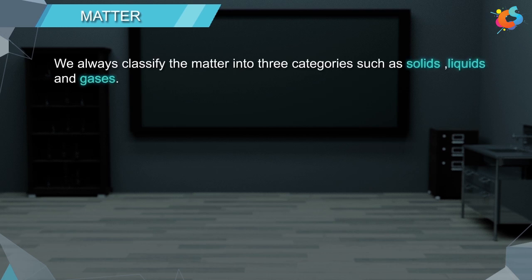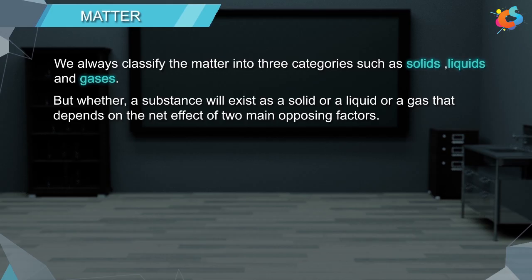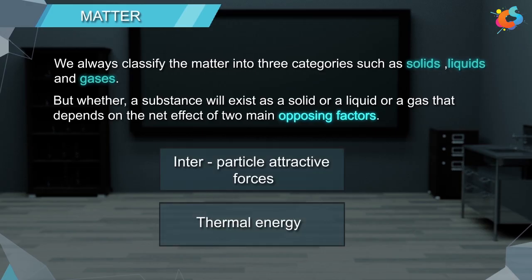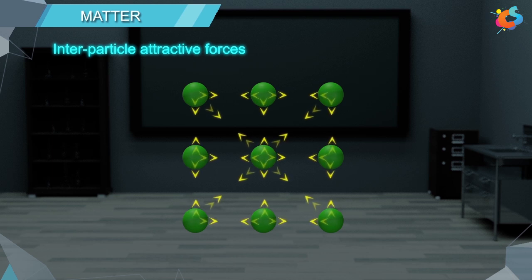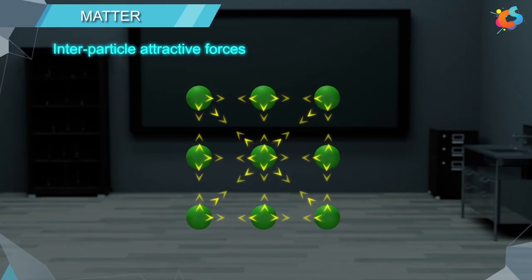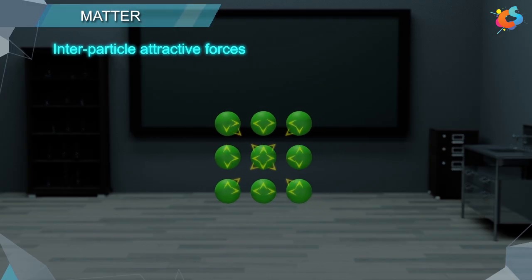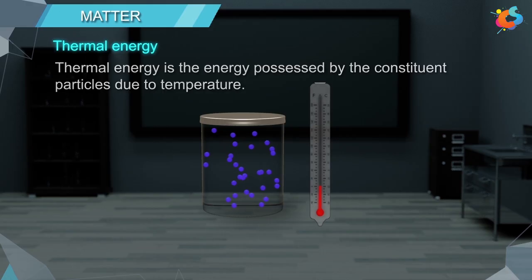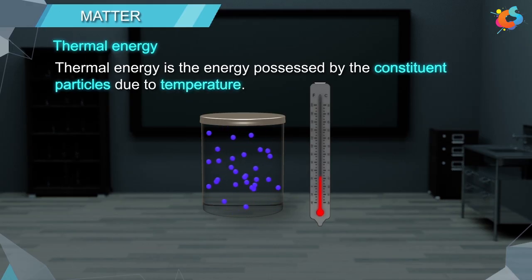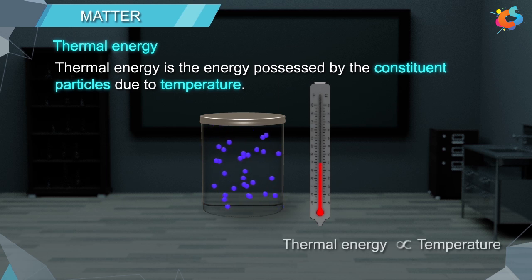We always classify matter into three categories: solids, liquids, and gases. But whether a substance will exist as a solid, a liquid, or a gas depends on the net effect of two main opposing factors. Interparticle attractive forces are forces that always tend to keep the constituent particles — such as atoms, ions, and molecules — closer to each other. Thermal energy is the energy possessed by the constituent particles due to temperature, and it makes the constituent particles move freely.